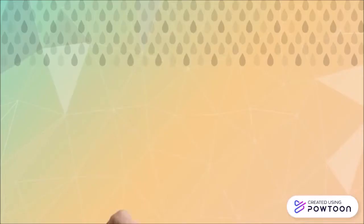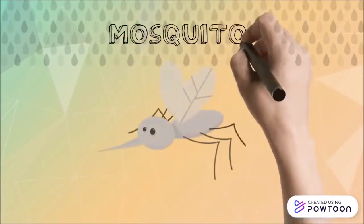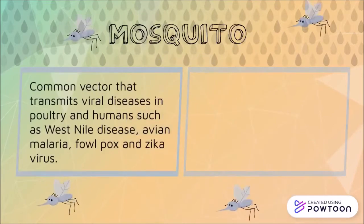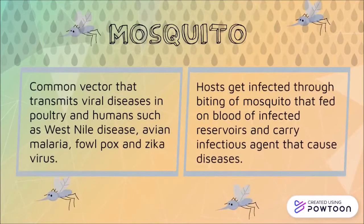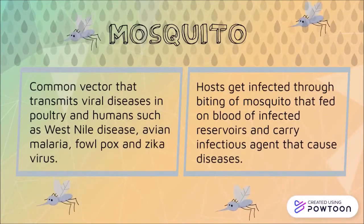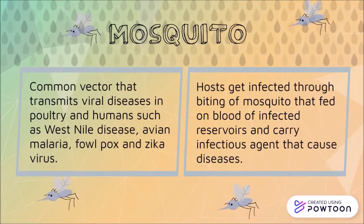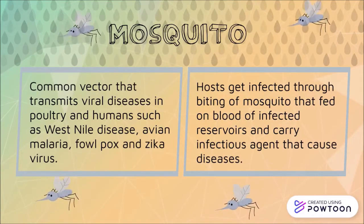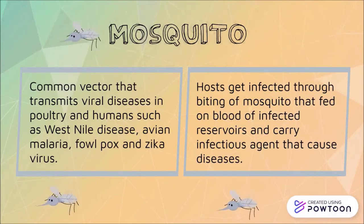Let's talk about mosquitoes. Mosquitoes are common vectors that transmit diseases in poultry such as West Nile disease, avian malaria, fowl pox, and Zika virus. The host will get infected through the biting of a mosquito that carries the infectious agent that causes the disease.